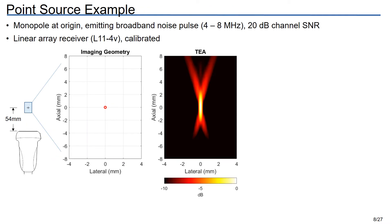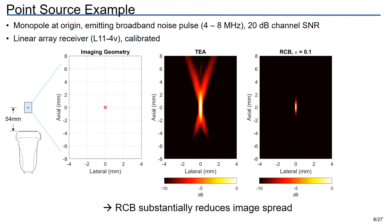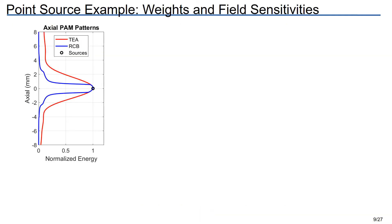Okay, let's start looking at some examples. This is a simulation with a monopole at the origin of the imaging frame, emitting a broadband noise pulse that's received by a linear array receiver 54 millimeters away from the origin of coordinates. When I beamform this with the non-adaptive beamformer, TEA, we had a characteristic elongated response pattern in the axial direction and some tail features. If we beamform that same data with RCB, however, we get a much tighter pattern.